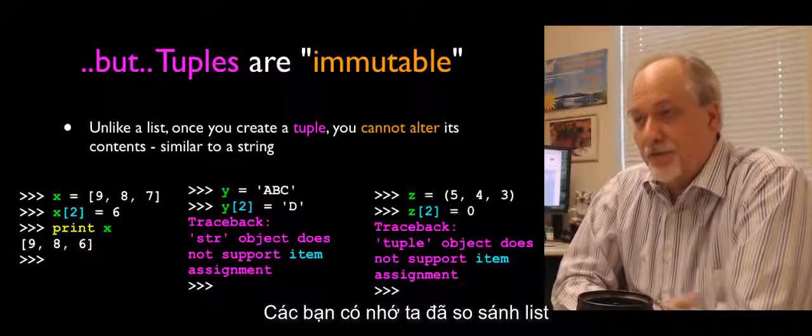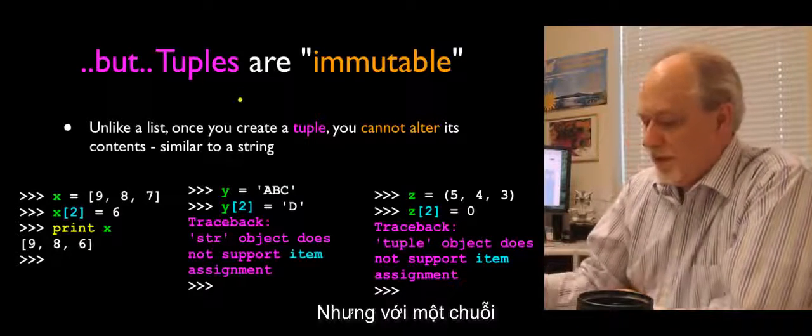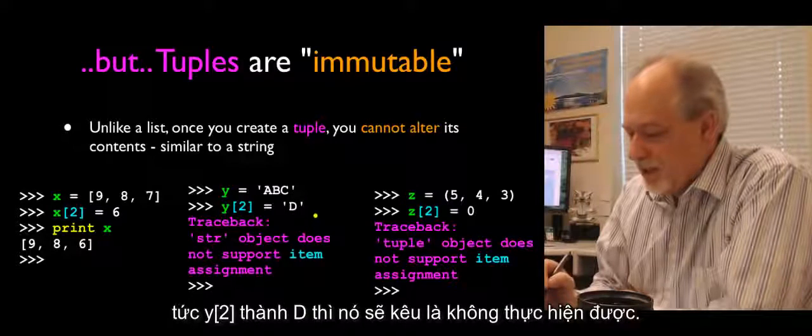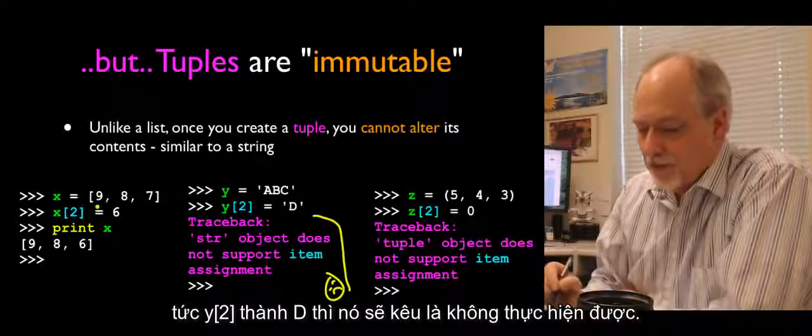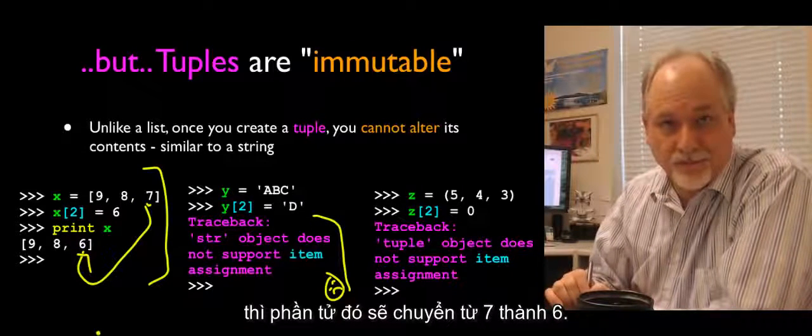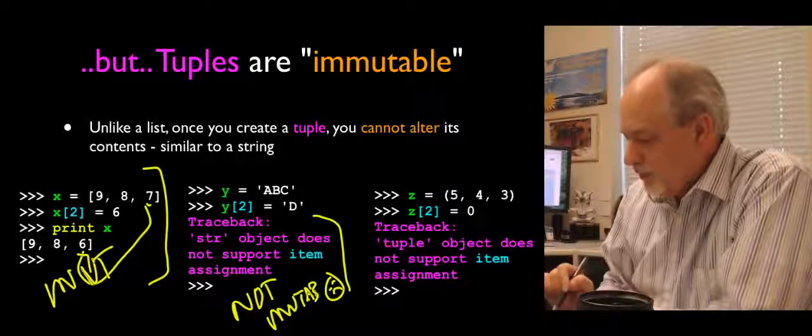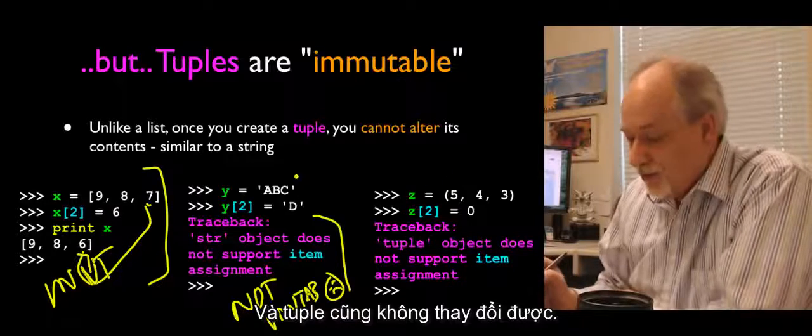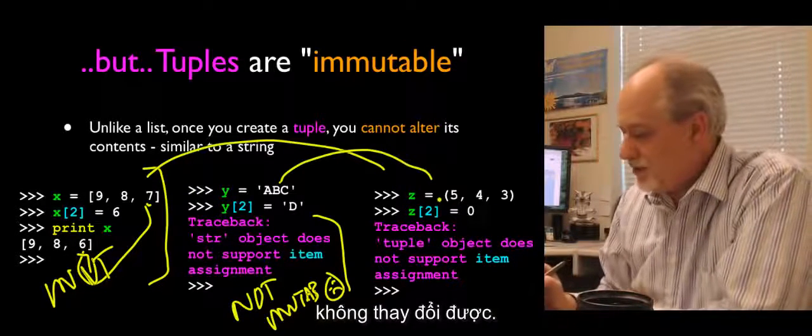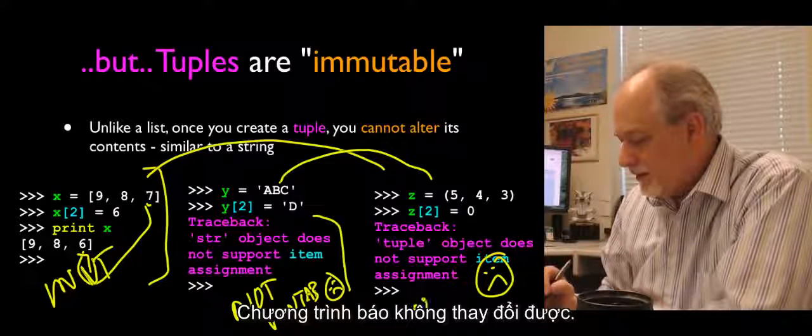Tuples are immutable. And so if you recall when we talked about lists, we compared them to strings, because both lists and strings are sequence of elements where the first one is 0, 1, 2, et cetera. But if we look at a string, for example, and we have a three-character string a, b, c, and we want to change the third character, y sub 2, to d, it complains and says, no, you can't do that. But you can do it on a list. So if we have a list 9, 8, 7, and we say x sub 2 is 6, which is the third item, then the third item changes from 7 to 6. So this is mutable. This is not mutable.